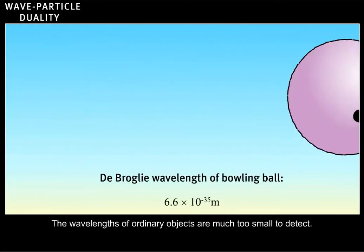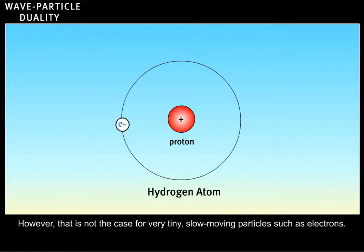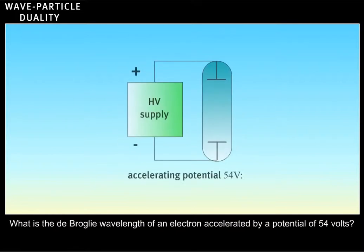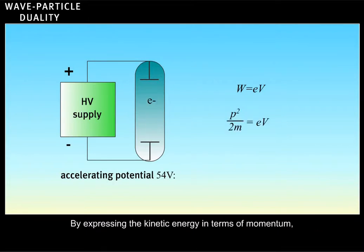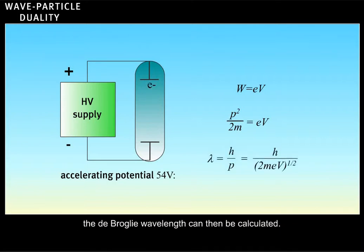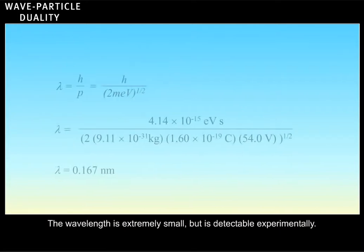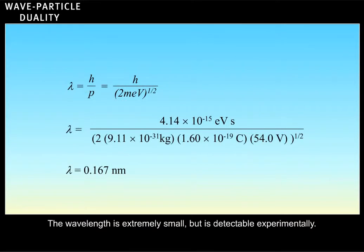The wavelengths of ordinary objects are much too small to detect. However, that is not the case for very tiny, slow-moving particles such as electrons. What is the de Broglie wavelength of an electron accelerated by a potential of 54 volts? The kinetic energy of the electron is equal to the work done accelerating it. By expressing the kinetic energy in terms of momentum, the de Broglie wavelength can then be calculated. The wavelength is extremely small, but detectable experimentally.